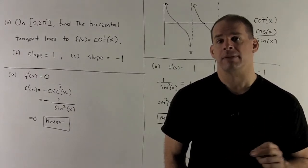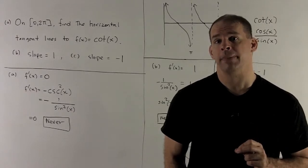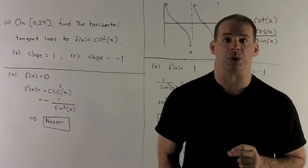Once you've done that, find where the slope of the tangent line is equal to 1, and where the slope of the tangent lines are equal to minus 1.